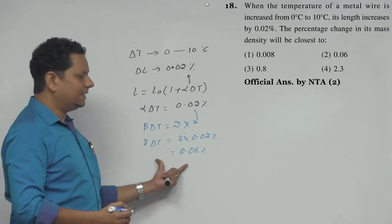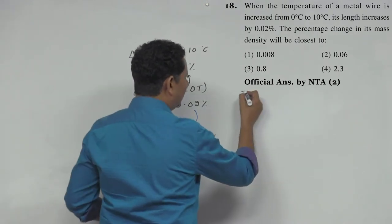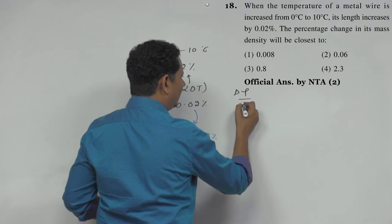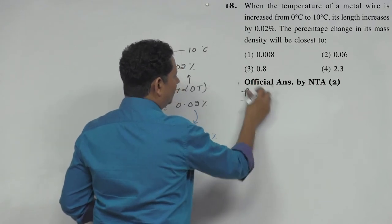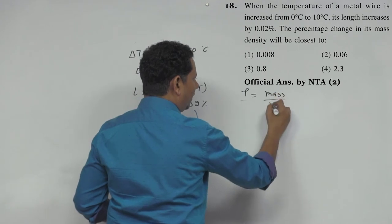So this change in mass density, delta density divided by density, where density is mass divided by volume.